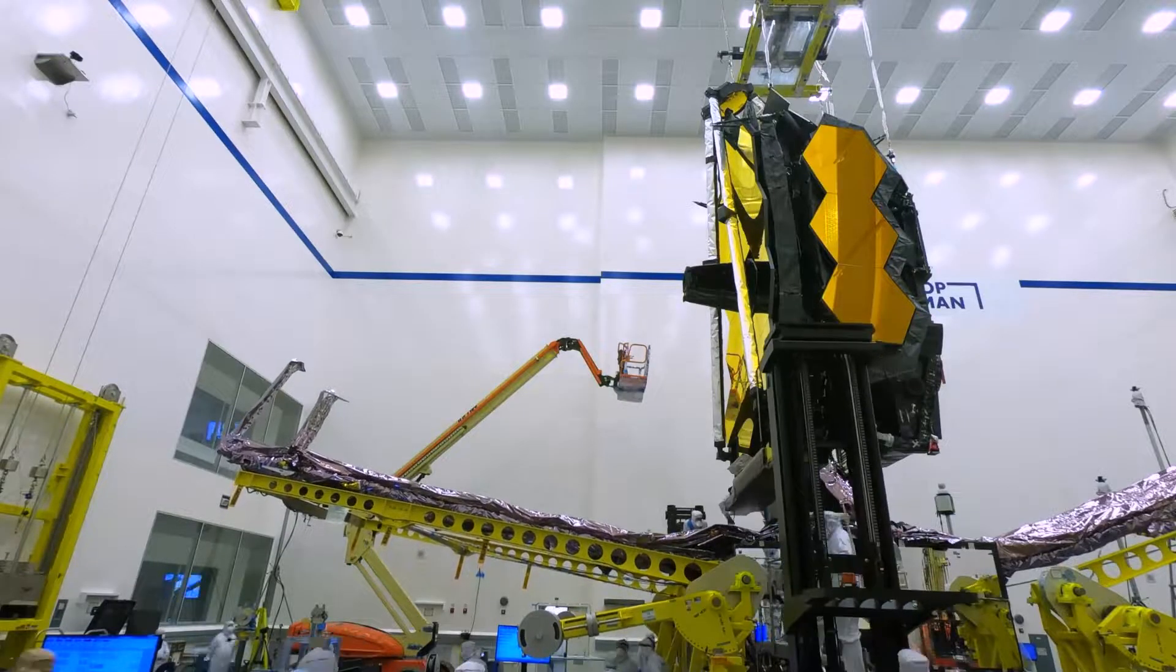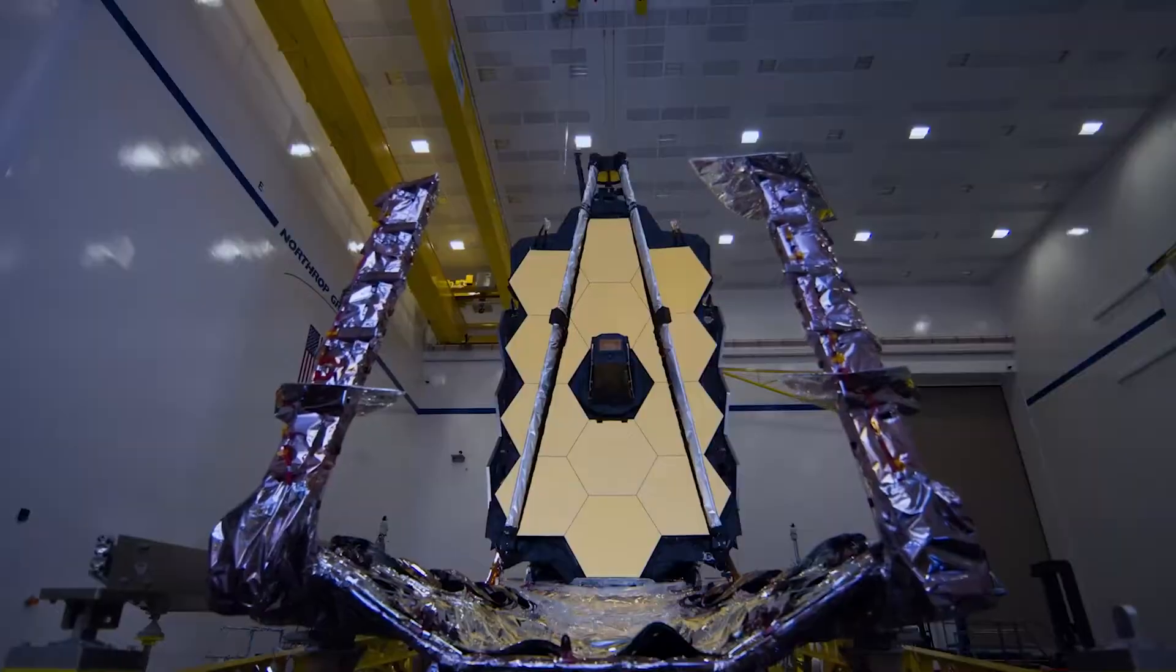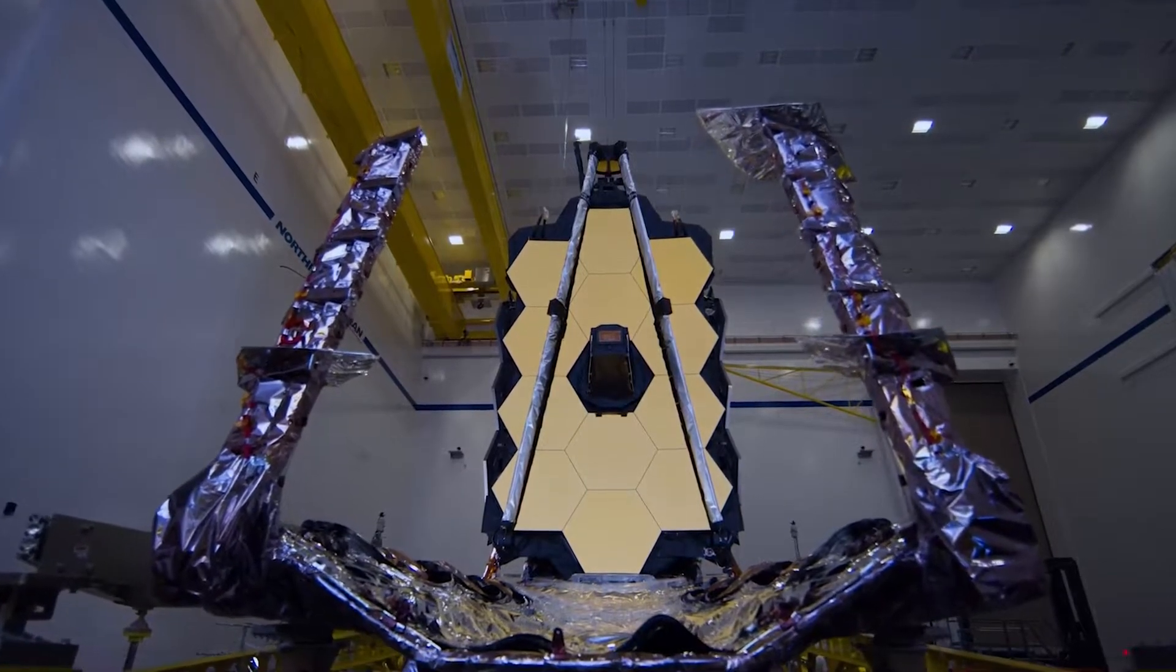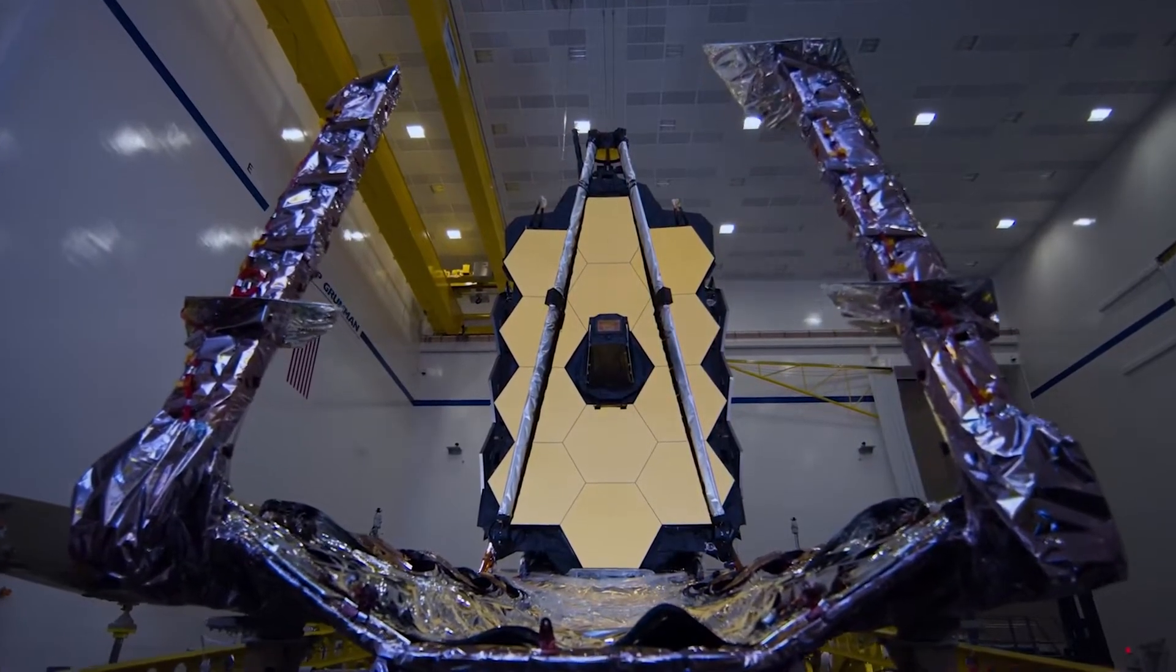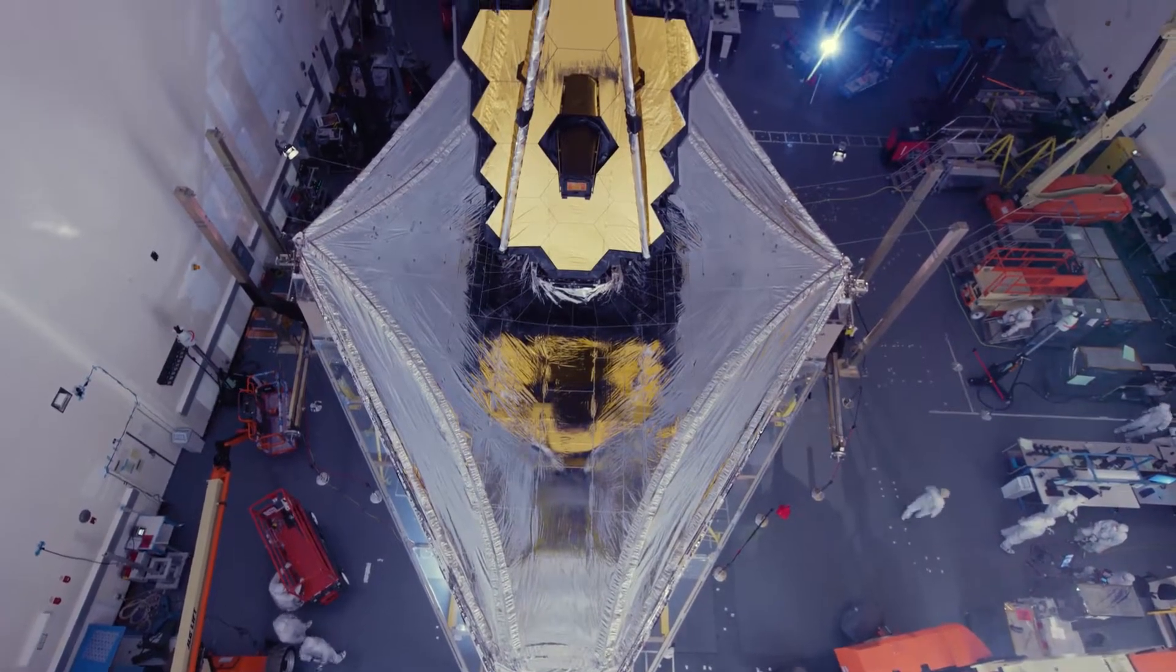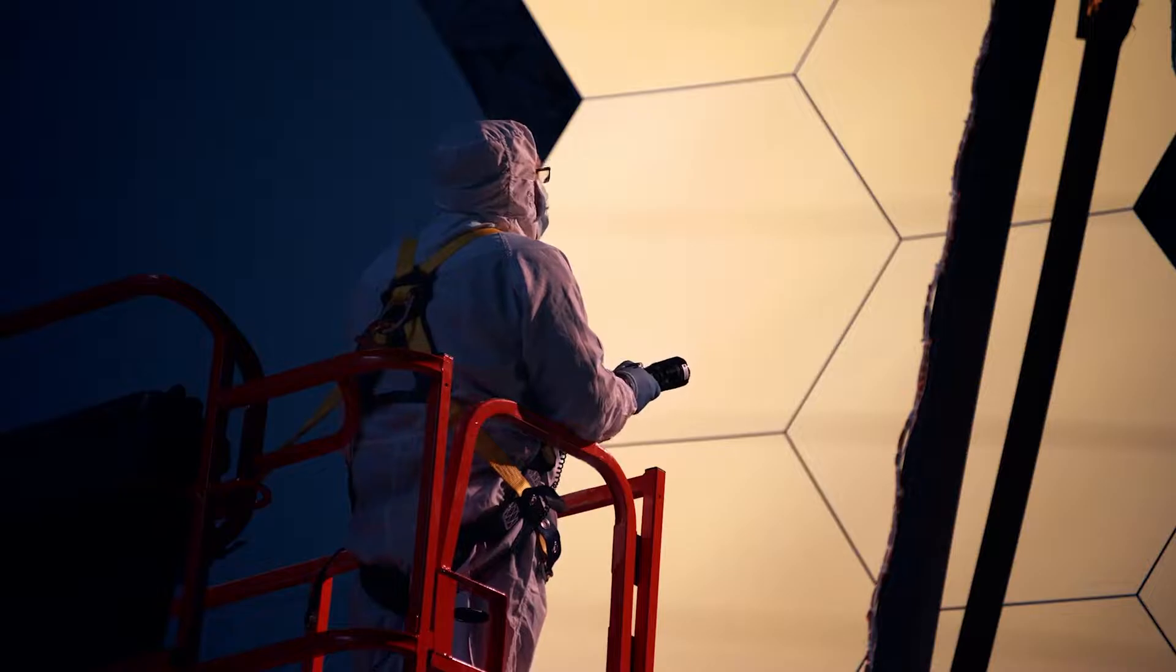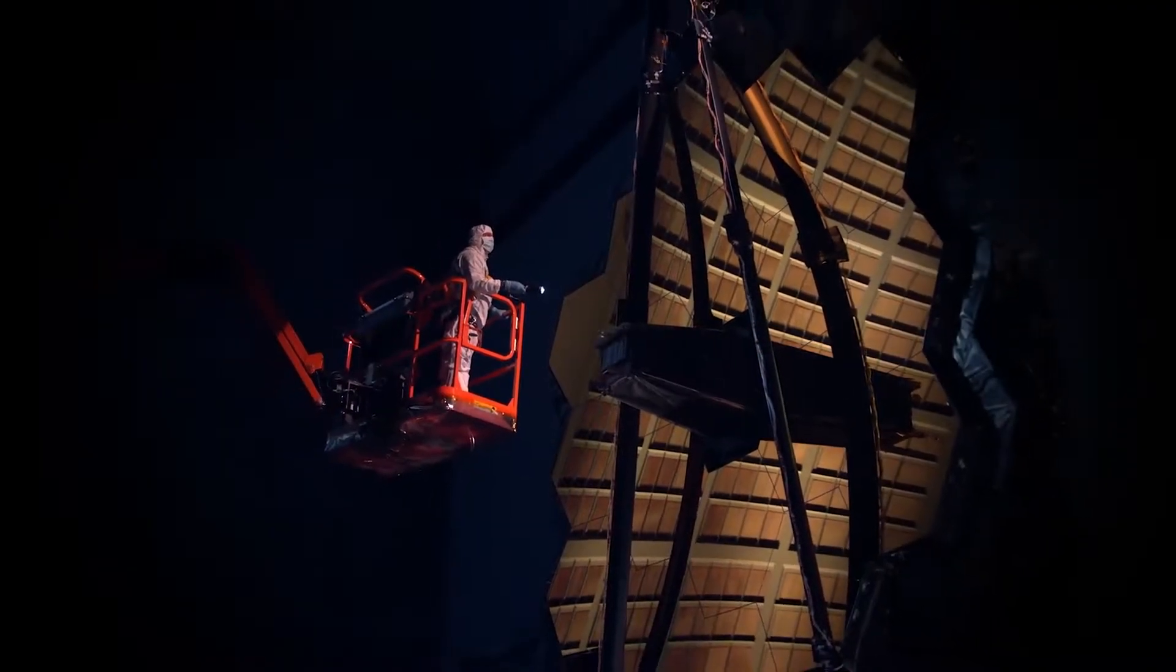So big, it had to be folded up like origami to fit onto the rocket that carried it into space. So precise and sensitive, it has to be kept at temperatures not much warmer than absolute zero to prevent its own internal heat radiation from getting in the way of its sensors. So expensive, it cost $10 billion to make, and so complicated, it took decades to complete.